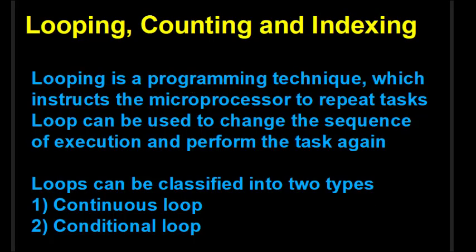Welcome to the lecture series on the 8085 microprocessor. Today we'll be learning some additional techniques like looping, counting, and indexing. Looping is a programming technique which instructs the microprocessor to repeat tasks. We use a loop — some instructions which form a loop — and a loop can be used to change the sequence of execution and perform a task again.